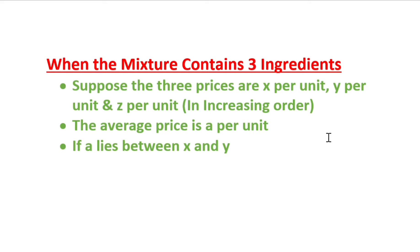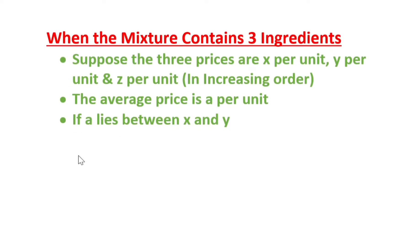For all three quantities there will be an average price, which we name as 'a' per unit. Now, if 'a' — the average price — lies between x and y, we write the allegation in a particular way. We already know how to do allegation, so with three ingredients we'll be writing the allegation using x, y, and z.